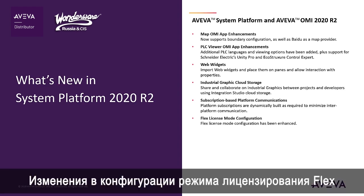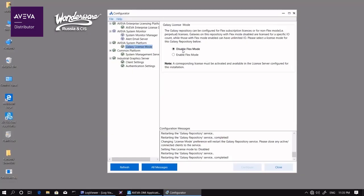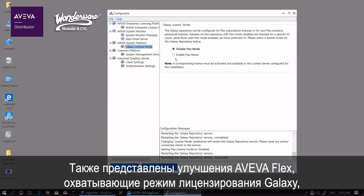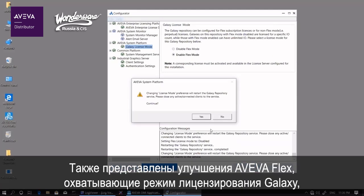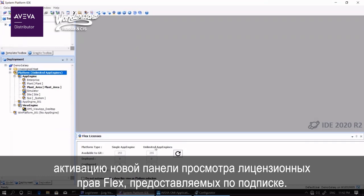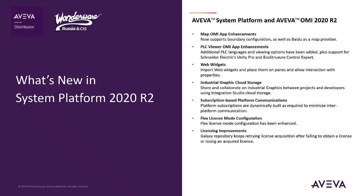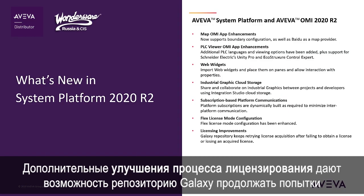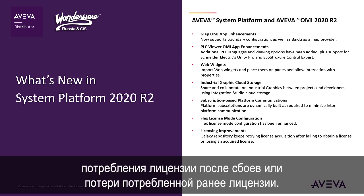Flex License Mode configuration. Aviva Flex enhancements include a Galaxy License Mode, activating a new Flex Licenses View panel to review license entitlements granted by subscription licensing. Additional licensing improvements allow the Galaxy Repository to continue attempting license acquisition after failing or losing an acquired license.